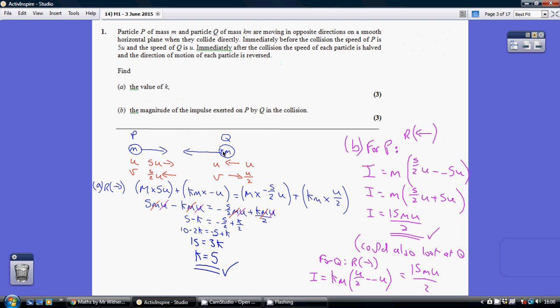So obviously they're travelling towards each other to start with. So U is to the right, U is to the left for Q, to the right for P. And then obviously after the collision they're both going away from each other. So V is to the left for P and V is to the right for Q.